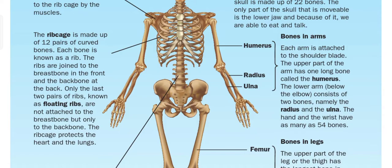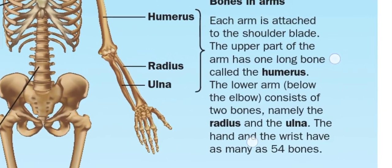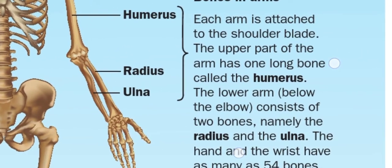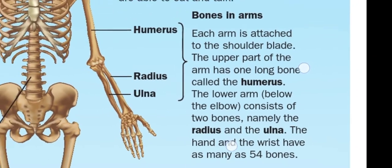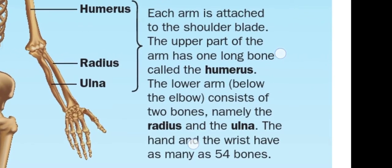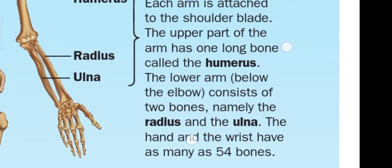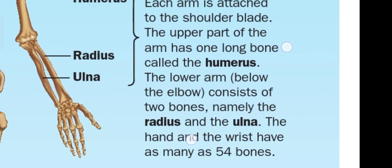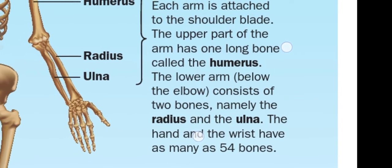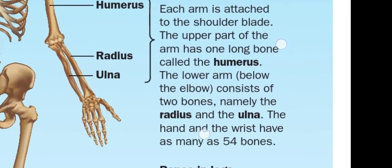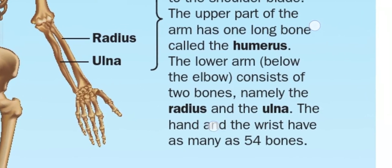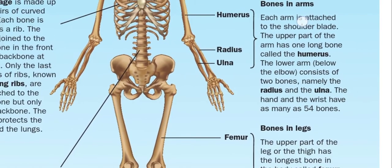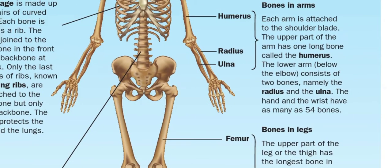Now let's look at arm bones. There are three bones in our arms: humerus, radius, and ulna. Each arm is attached to the shoulder blade. The upper arm has a long bone called the humerus. Below the elbow there are two bones, namely the radius and ulna. The hand and wrist together have as many as 50 bones.